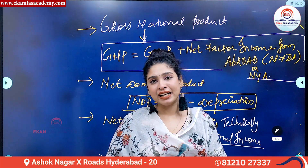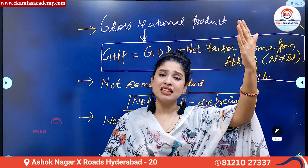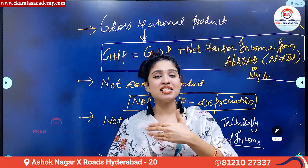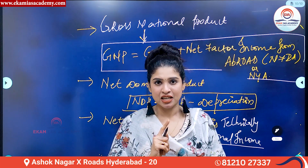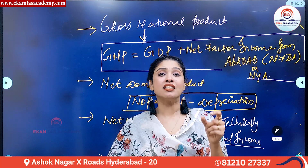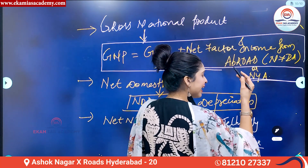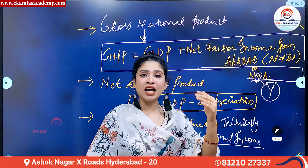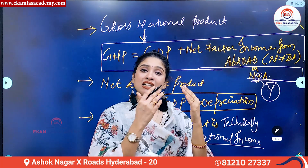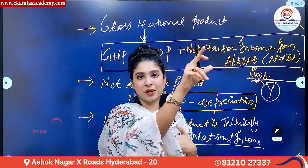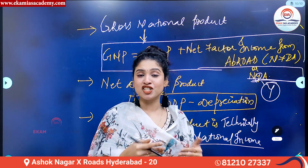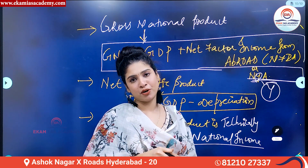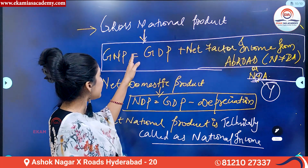When someone is staying outside India, whatever they earn or produce, they will start sending money to their family in India. For example, if I'm working abroad in Japan, I may send money to my family in India — that's called remittances. This is also called net factor income from abroad, or NFIA (represented as NYA in economics, since income is denoted by Y). Net factor income from abroad means income earned by a country's citizens in other countries minus income earned by foreign citizens within the domestic country.